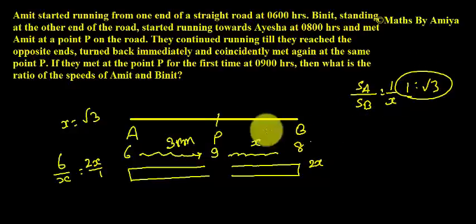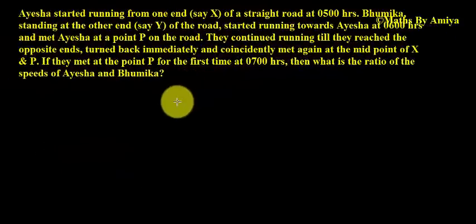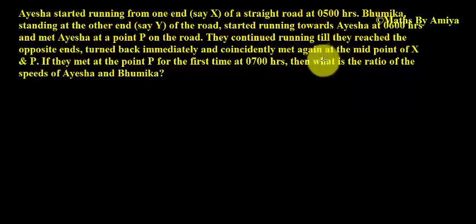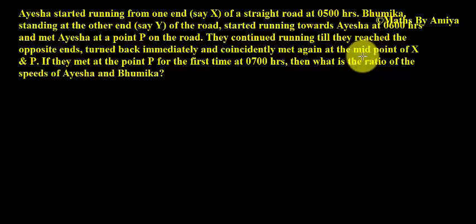I hope it is clear. This is as simple as drawing the chart. You just need to understand that the first and second meeting time for both players is the same. Now let's solve the last question of this concept video. Please read the question and solve the question. I hope you have solved the question. Here the only difference is that the next meeting is not at P — they meet again at a midpoint between X and P, unlike the previous two questions where they were meeting at P.